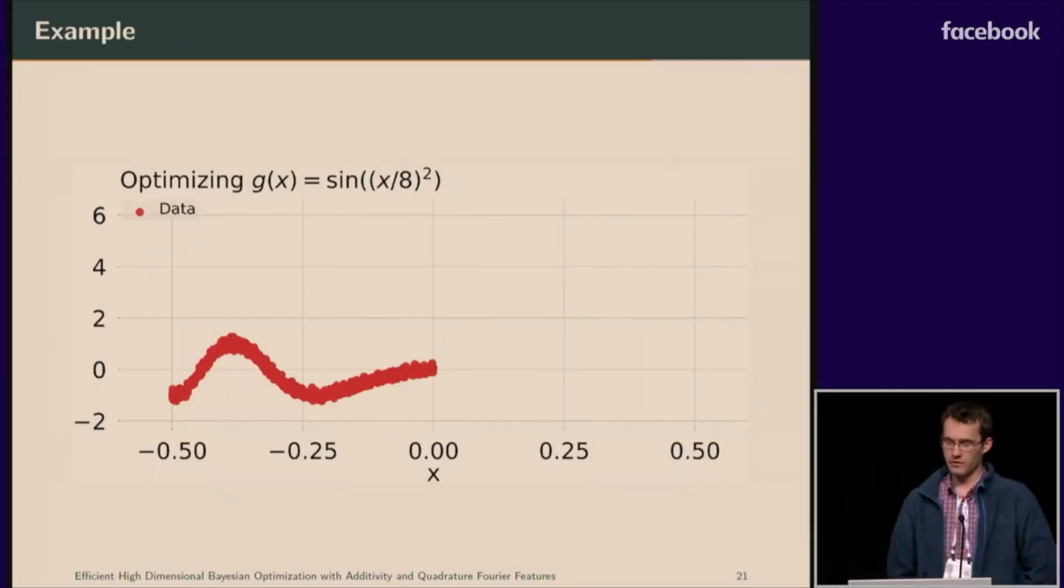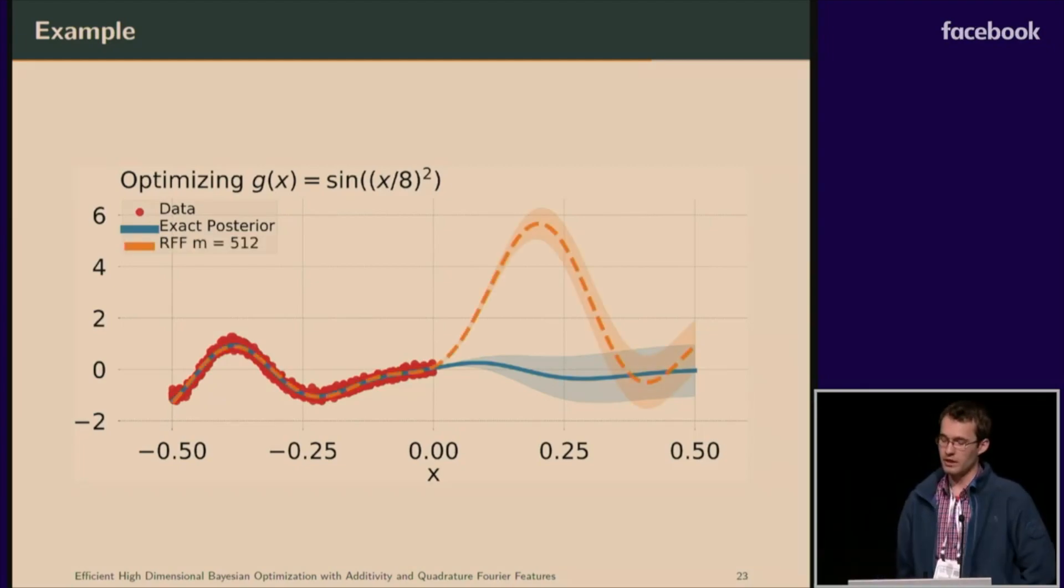To demonstrate the quality of this approximation, suppose that we are trying to optimize this function and we have these noisy point evaluations. If we fit our Gaussian posterior mean and confidence estimates, we see that it fits the data nicely and extends also to the unknown part of the domain. If we had used random Fourier features, we see that in the unknown part of the domain, the posterior mean and confidence estimates would be completely off.